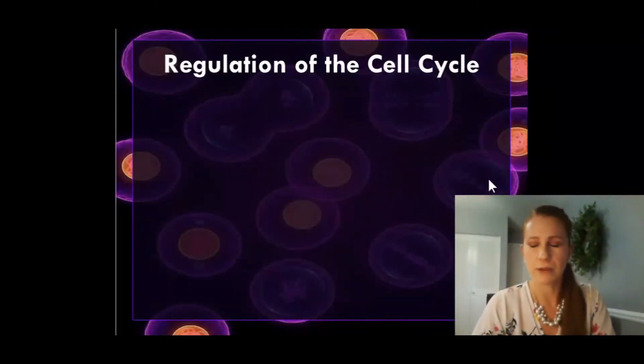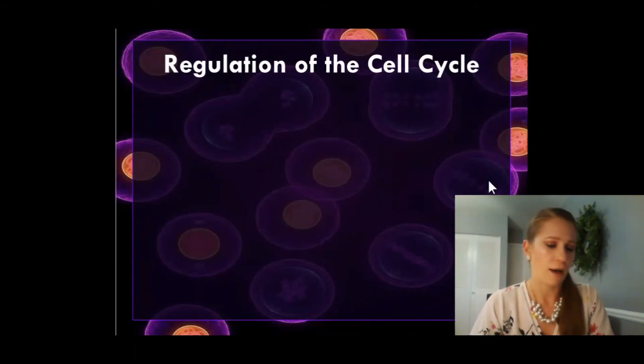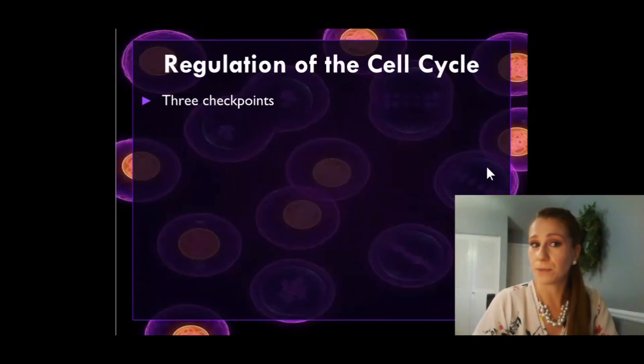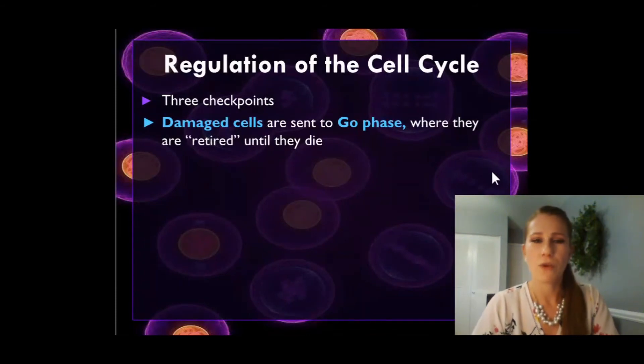Now our cell cycle has to be regulated. We can't be dividing constantly all the time. We'd be much larger than we look. Our cells only want to divide when they have to. So when they're needed to grow, when they're getting too big they need to divide. When they need to heal, or when something needs to be developed and changed. There are three main checkpoints in the cell cycle. Damaged cells get sent to the G0 phase, or G-naught phase it's sometimes called, where they get retired till they die. My favorite way to remember this, if you have a damaged cell and it's not working properly and something's going wrong, I say it gets sent to go die. Go like G0. So a lot of my students remember it that way. So they get told to go away so that they can be retired.